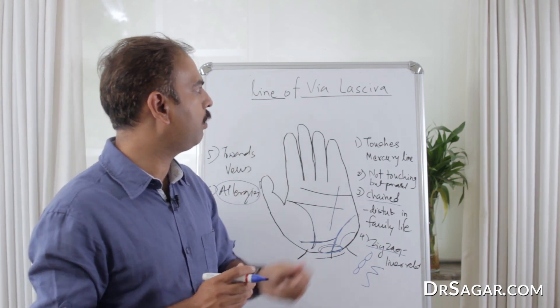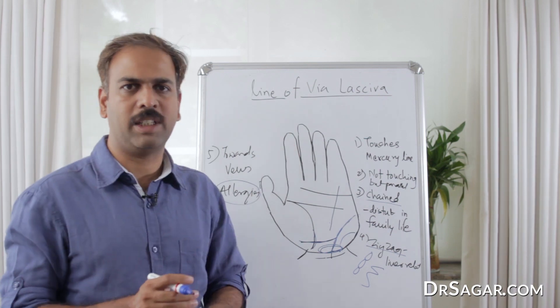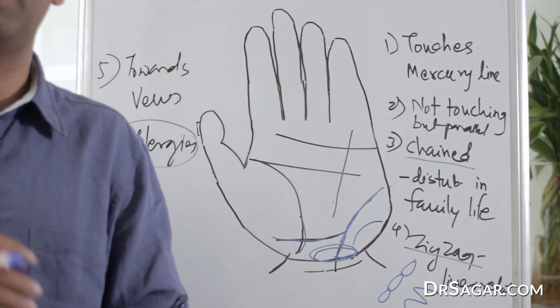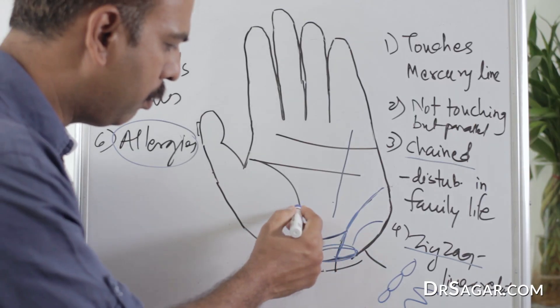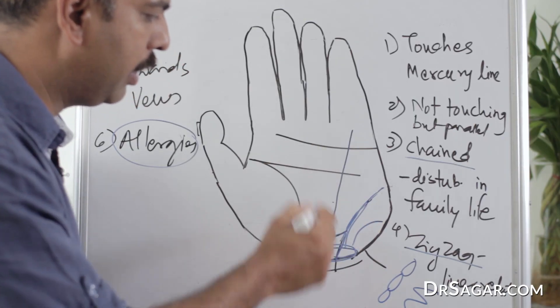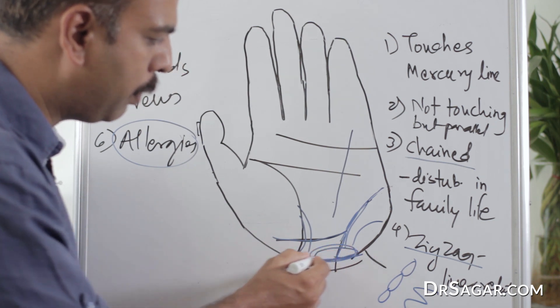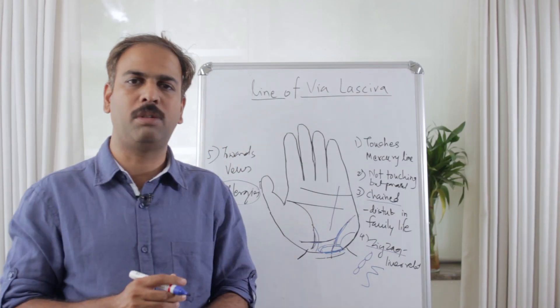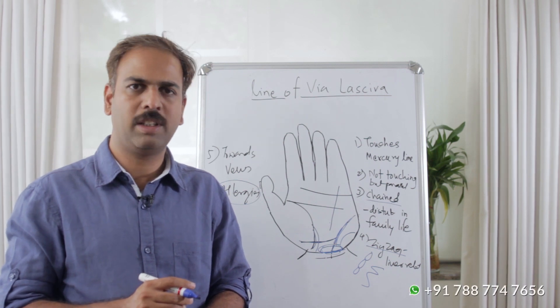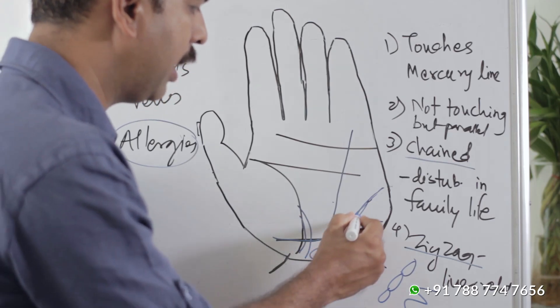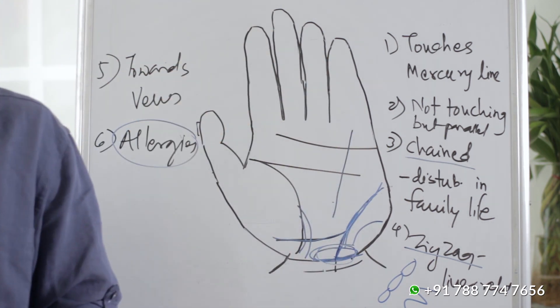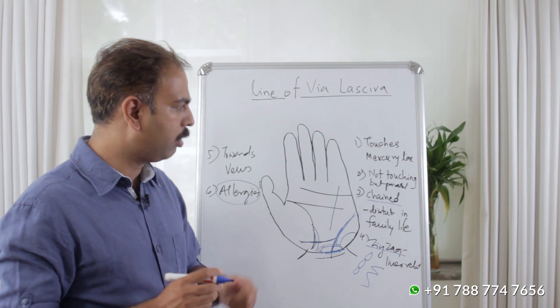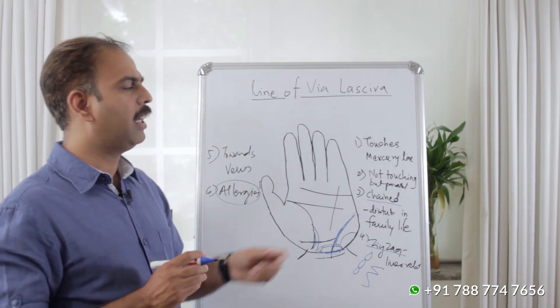So this is the line of Via-Lasciva. We will see its position, where it starts. So Venus and Moon, and on the bracelet line, the area is called Ketu's area. From there, this line is increasing. This line is called Via-Lasciva.